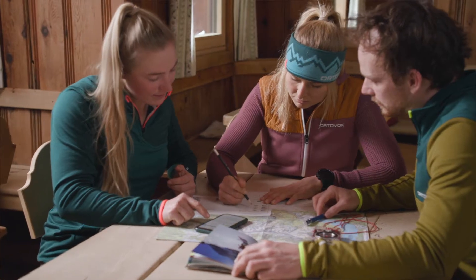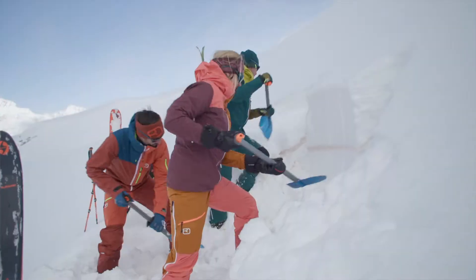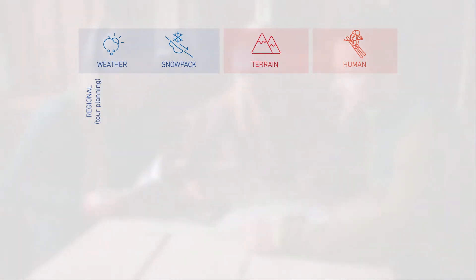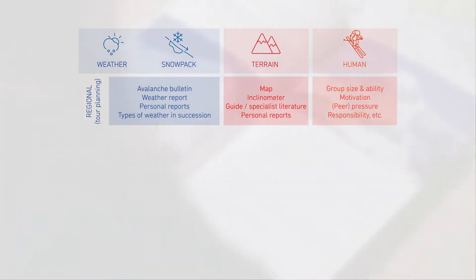There are countless aids and methods for dealing with risks on ski tours in the Alps. One fundamental and very widely used strategy is the 3x3 filter method. Here we take a look at three pillars: the conditions, the terrain, and the people — so who is on the tour. We plan the whole thing at home or in the cabin, make our preliminary plan — that's our first filter.